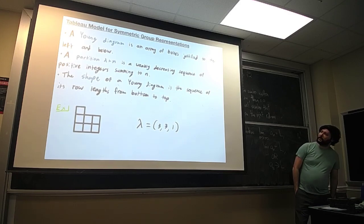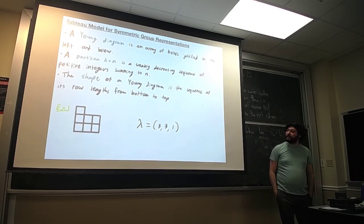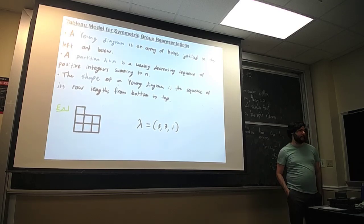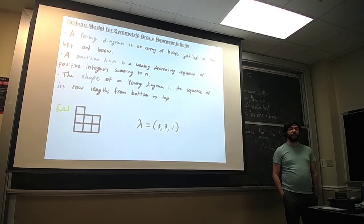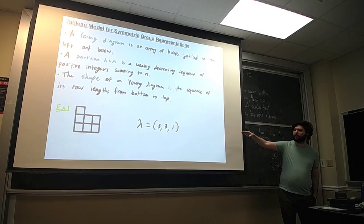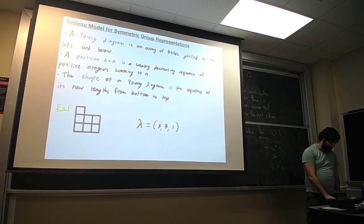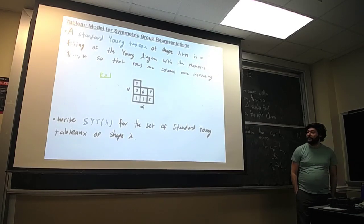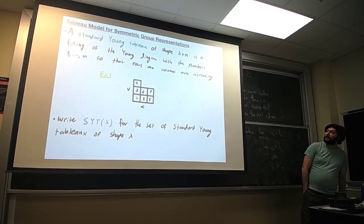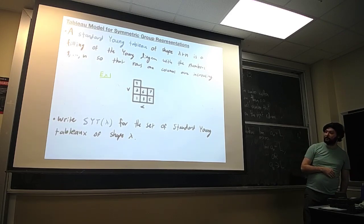A Young diagram is an array of boxes justified to the left and below. A partition lambda of n is a weakly decreasing sequence of positive integers. The partition helps us record the shape of the Young diagram by recording the number of boxes in each row from bottom to top — so here this is shape (3,3,1). We fill these diagrams with numbers: a standard Young tableau of shape lambda is a filling with the numbers 1 to n so that rows and columns are increasing. We write SYT(lambda) for the set of standard Young tableaux of shape lambda.